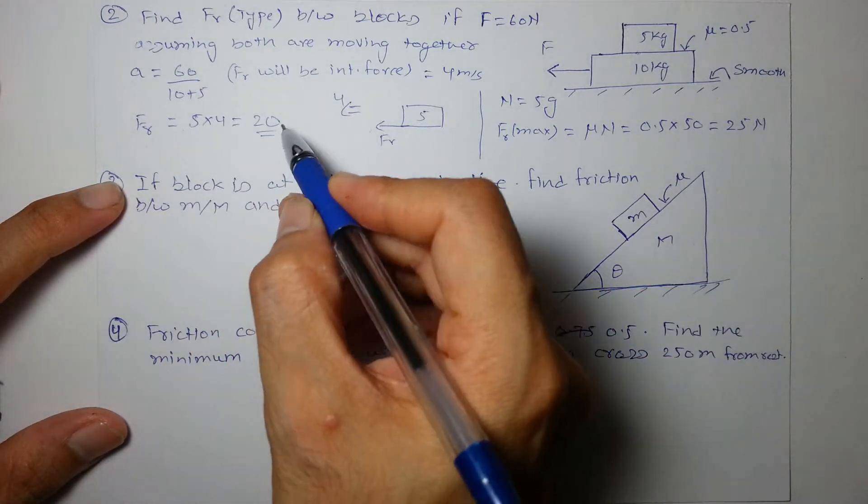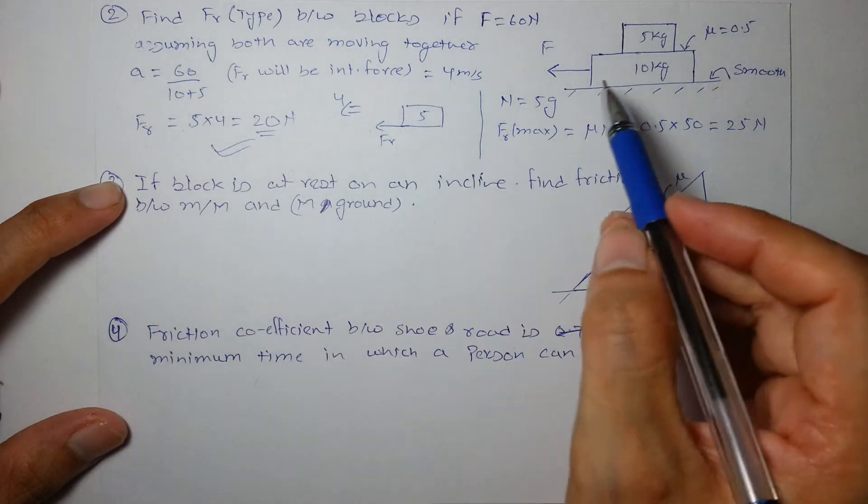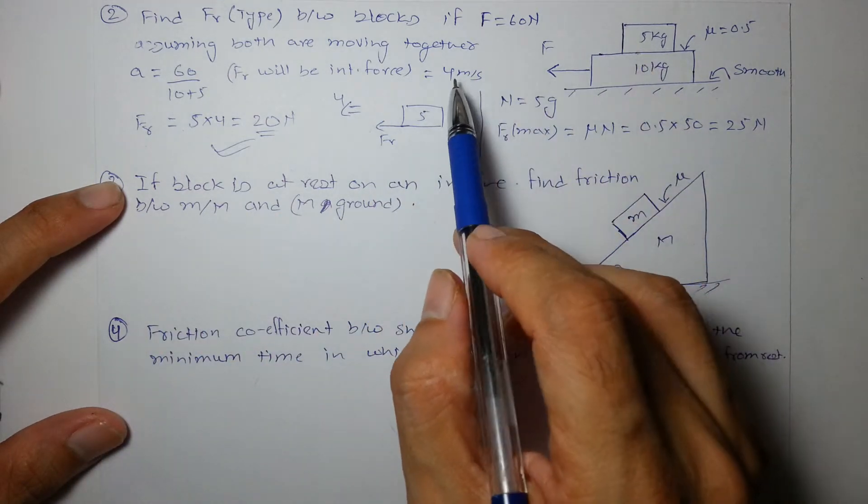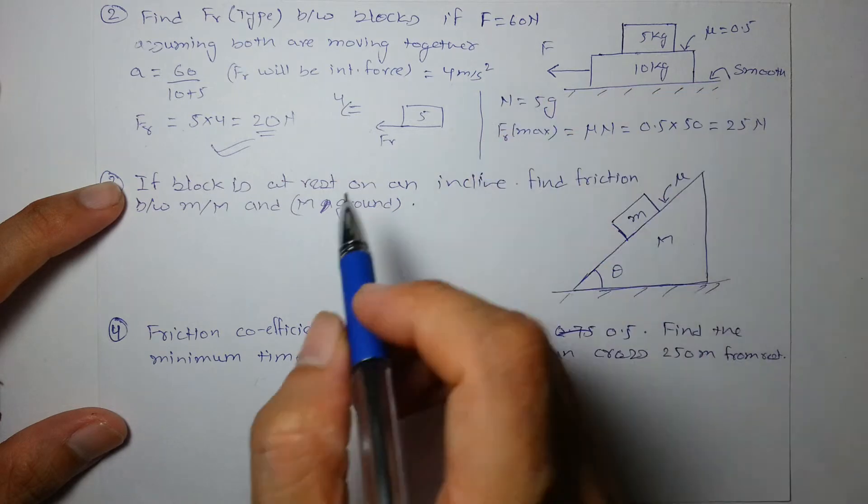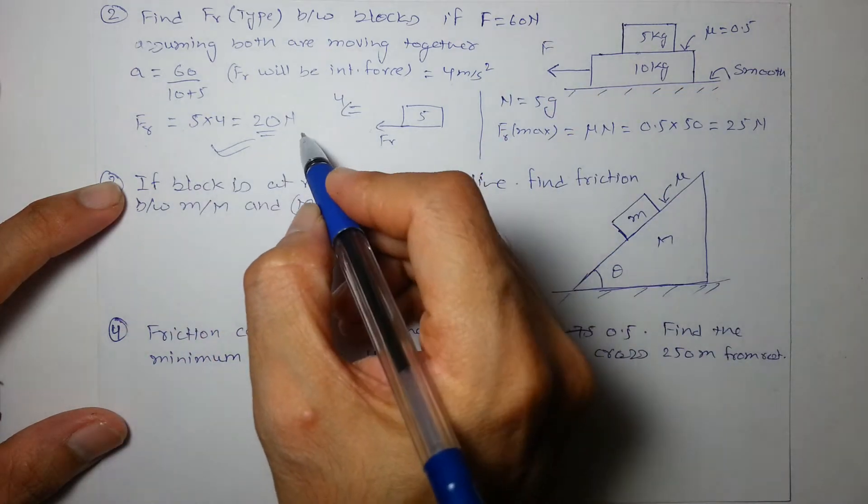And the required friction is 20 N, so our assumption is right and both are moving with an acceleration of 4 meter per second square and the friction force acting is 20 and that is of static type.